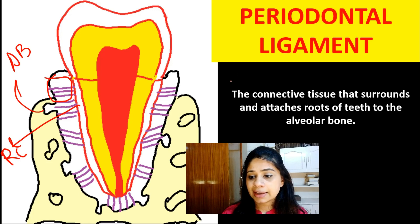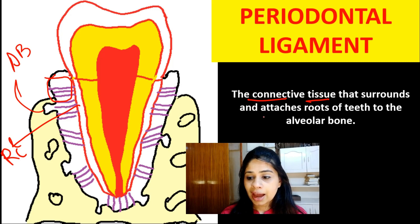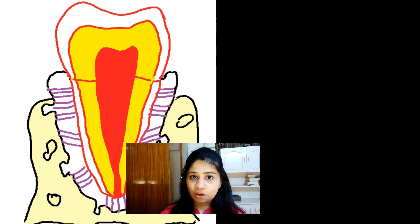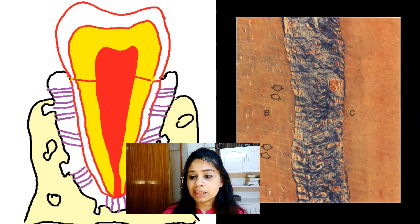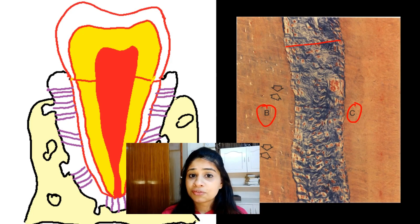The first part of the definition states that it is a connective tissue. We have previously spoken about the epithelial aspect — the junctional epithelium, the sulcular, and the oral epithelium. Now we are looking more at the interior, at the connective tissue that surrounds and attaches the root cementum to the alveolar bone. In a cross-section observed under a light microscope, we can see two mineralized aspects: the bone on one end and the cementum on the other, with the periodontal ligament interposed between them, collagenous in nature and forming a meshwork.